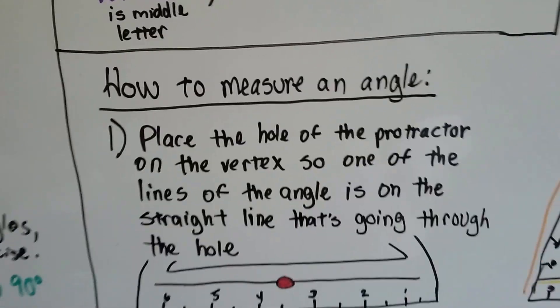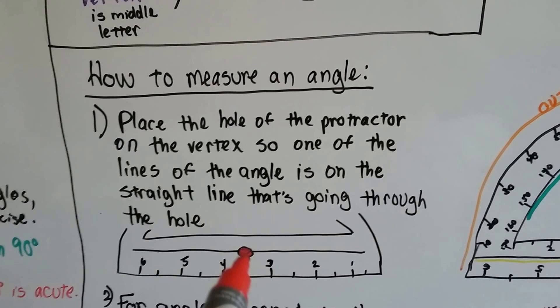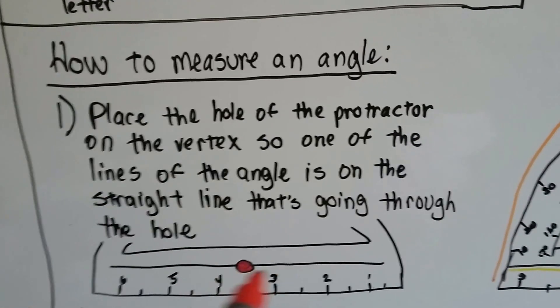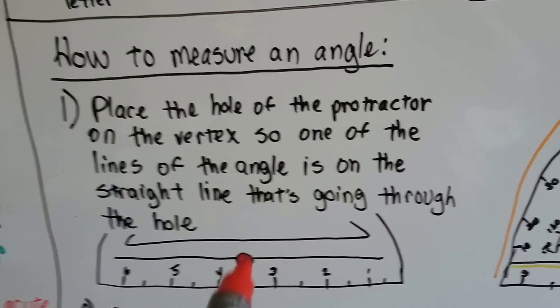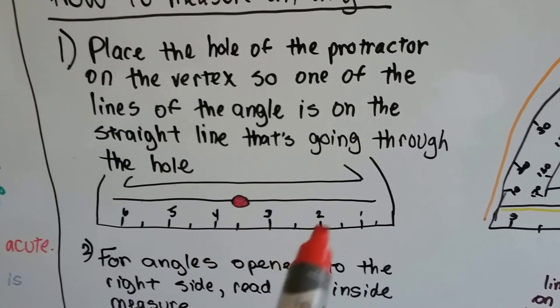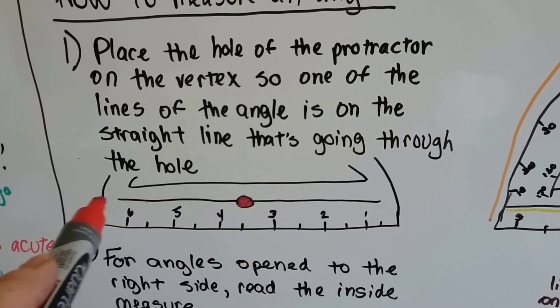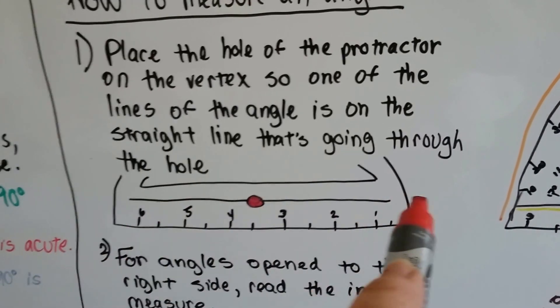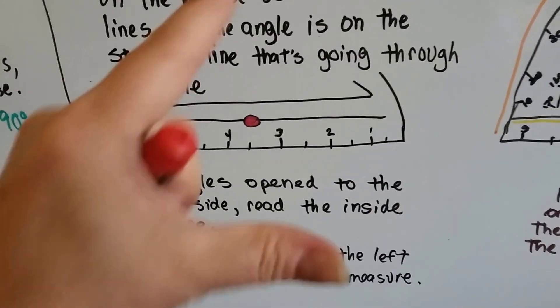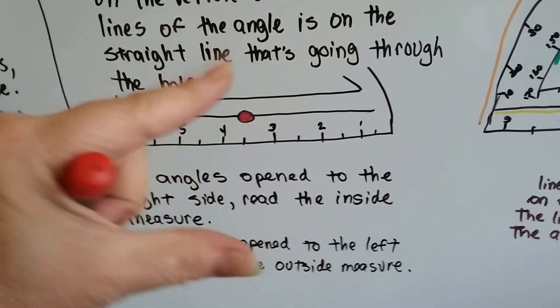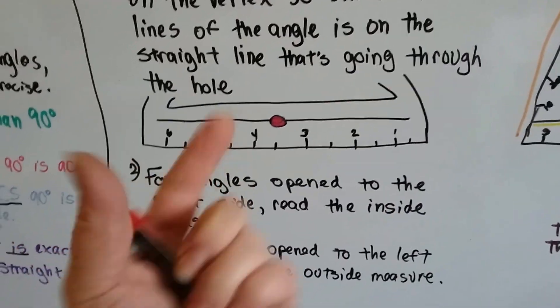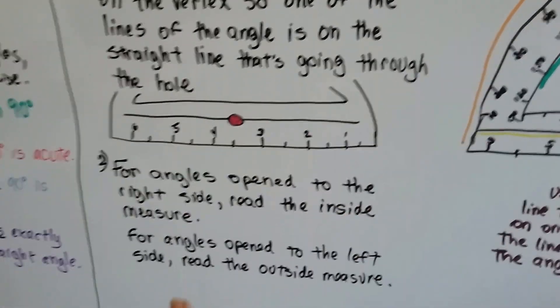Now, to measure an angle, you place the hole of the protractor. There's a little hole right by the three, the measurement. There's inches and then there's centimeters. And if you look by the three measurement, there's a little hole. And you place that hole on the vertex of the angle. Okay? And then there's a straight line that goes through the hole. You lay that on one of the lines of the angle. Okay? Now, for angles that are open to the right side like this, it's open towards my right. You read the inside measure inside here. And for angles that are open this way, you read the outside measure.